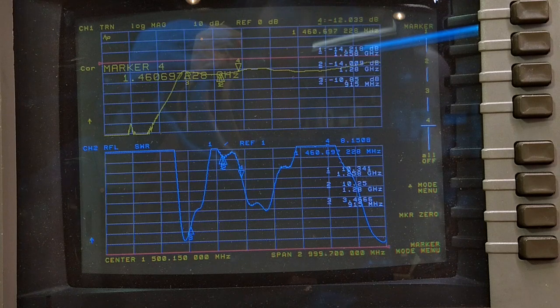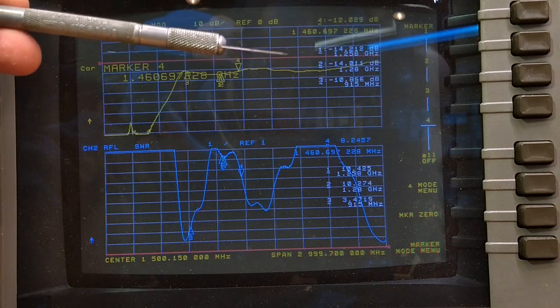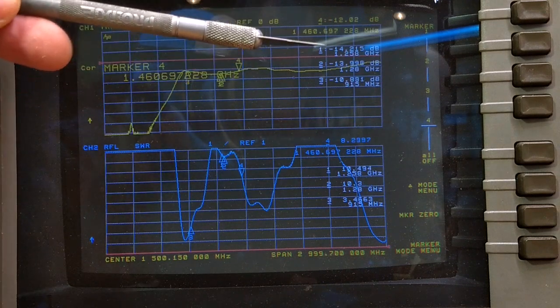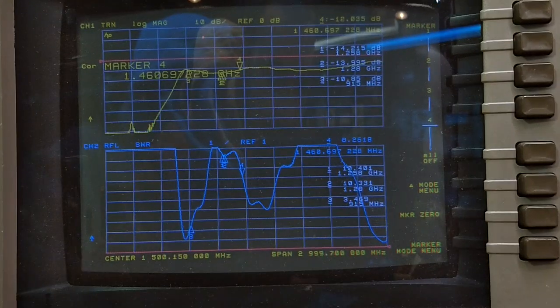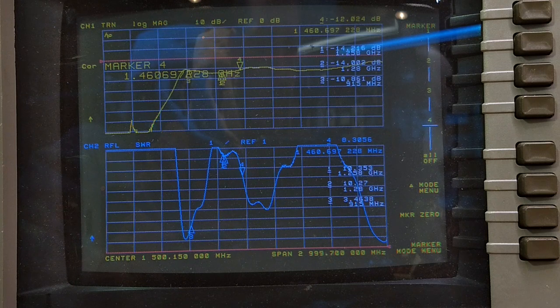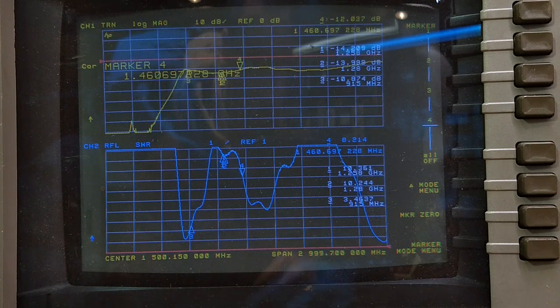Whichever one's the active marker always gets pushed up to the top. So anyways, you can see that we've got, because the device is off, lots of loss all over the place. And the SWR kind of sucks.